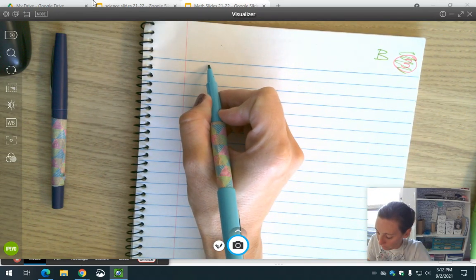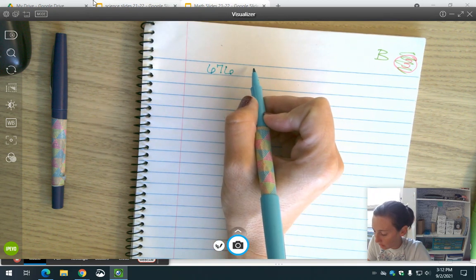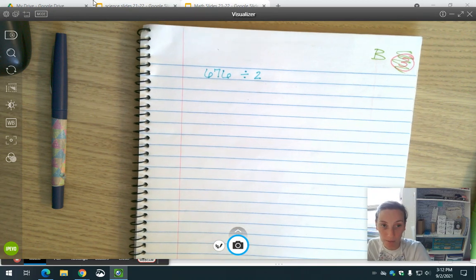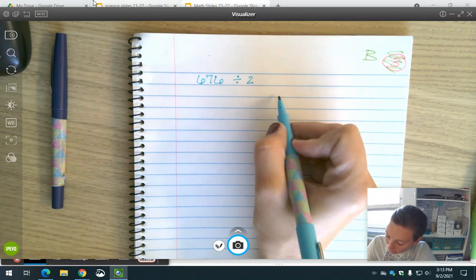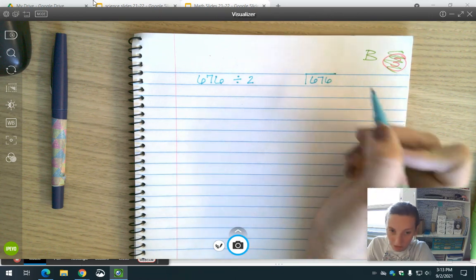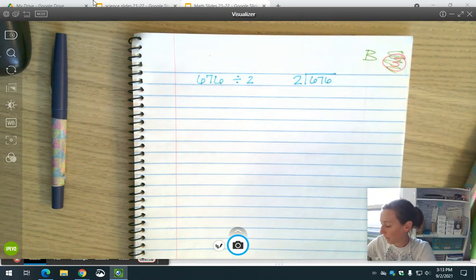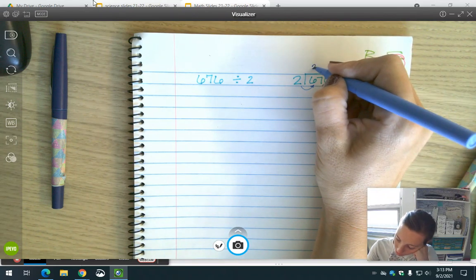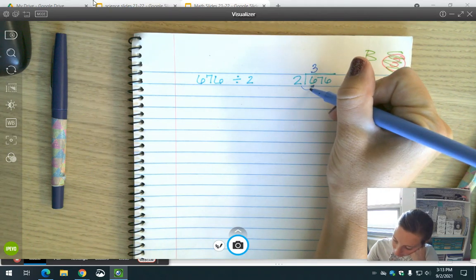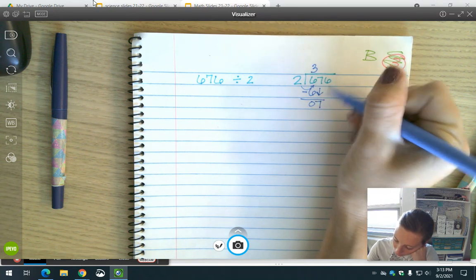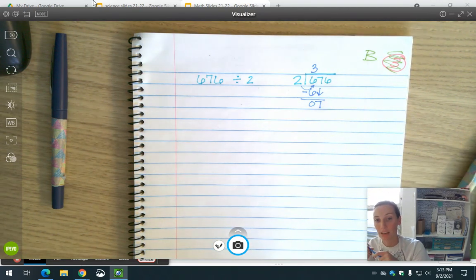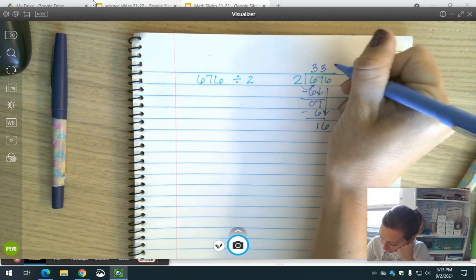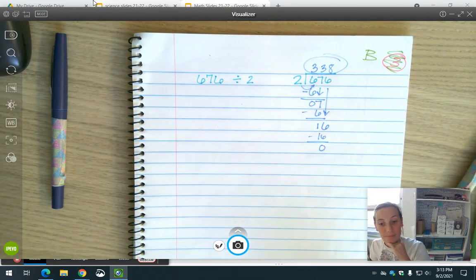Let's do 676 divided by 2. Start by setting up your problem. You should have the dividend 676 under and the divisor 2 off to the side. Now we go, does 2 fit into 6? Yes it does. How many times does it fit into 6? 3. There's my D for divide. Multiply, 3 times 2 is 6. 6 minus 6 is 0. B, bring down. Try to do the rest of it and then we'll check it.